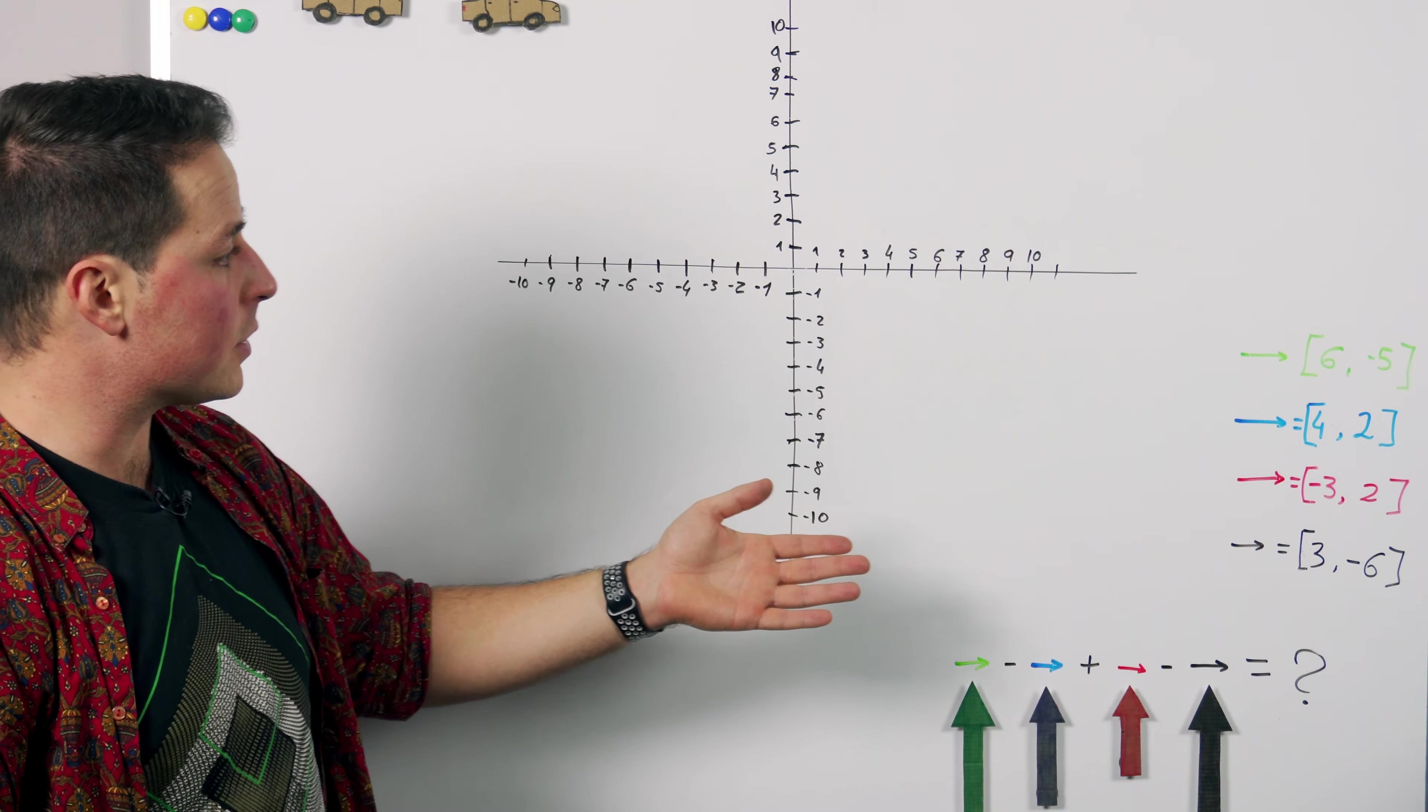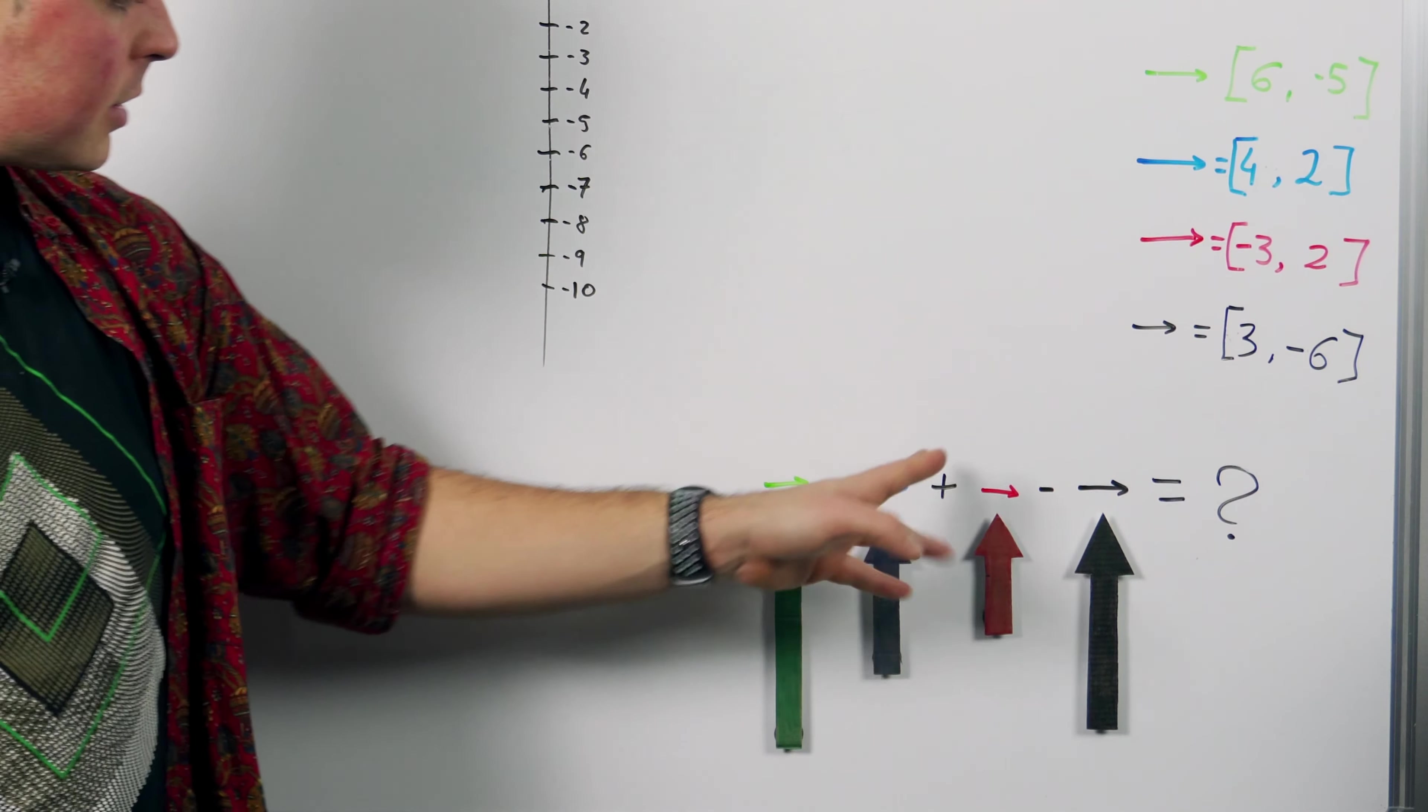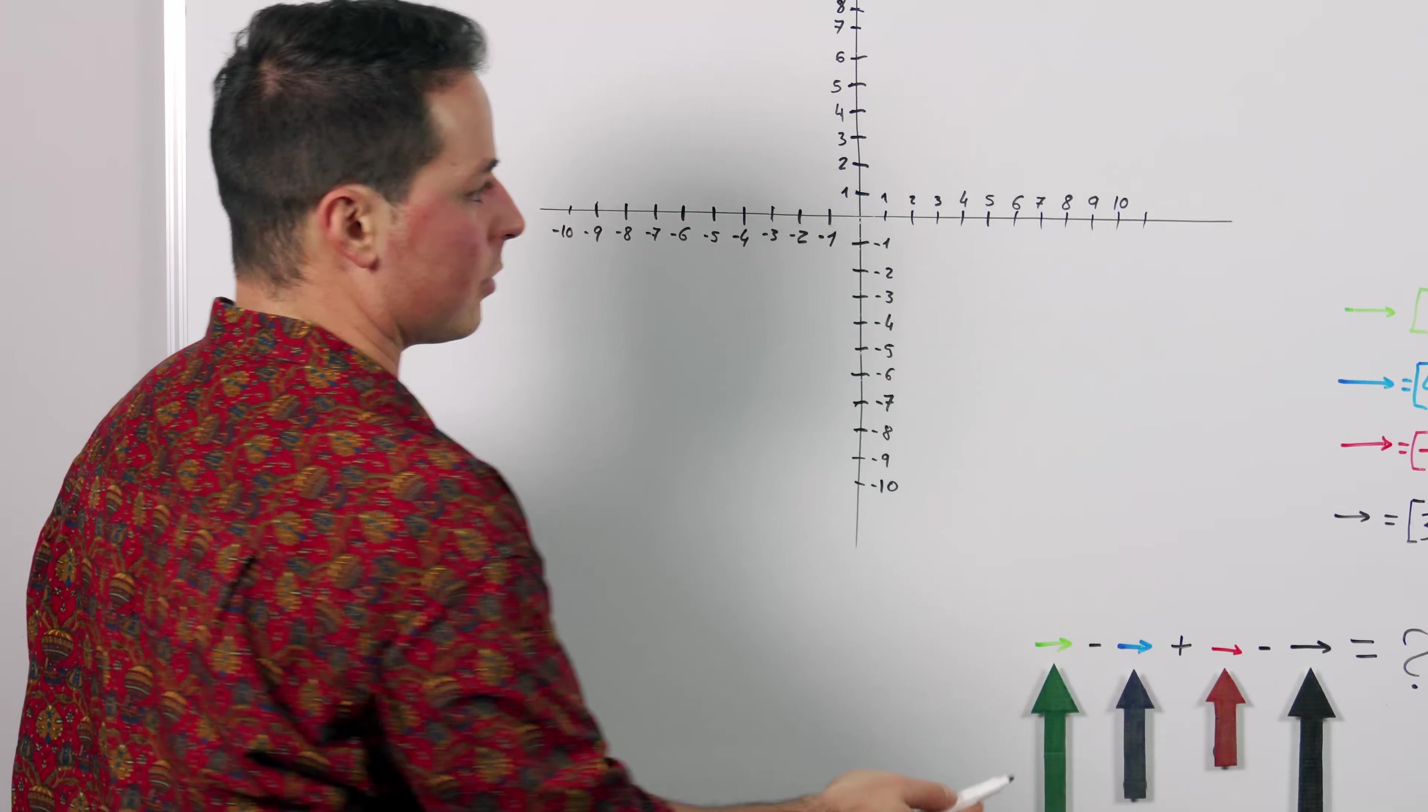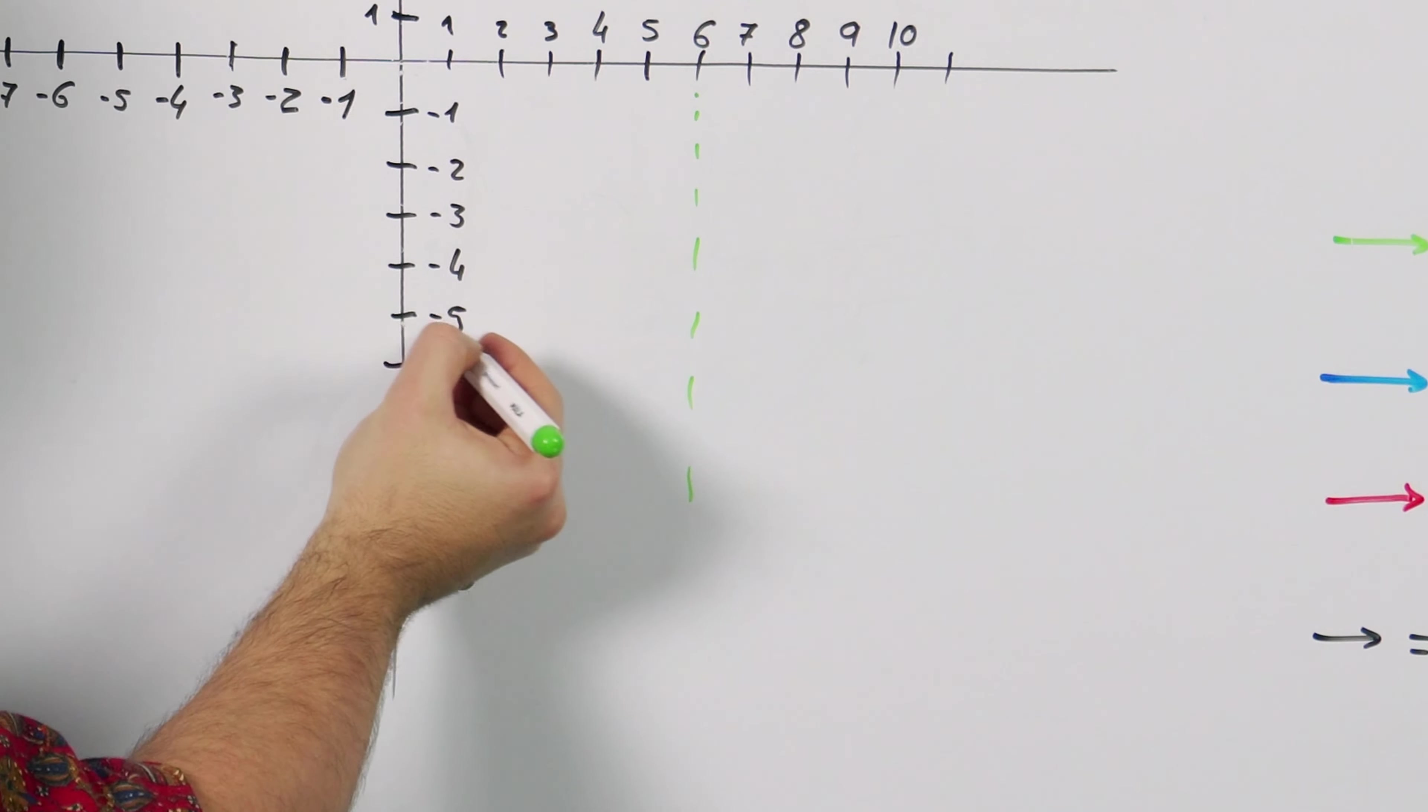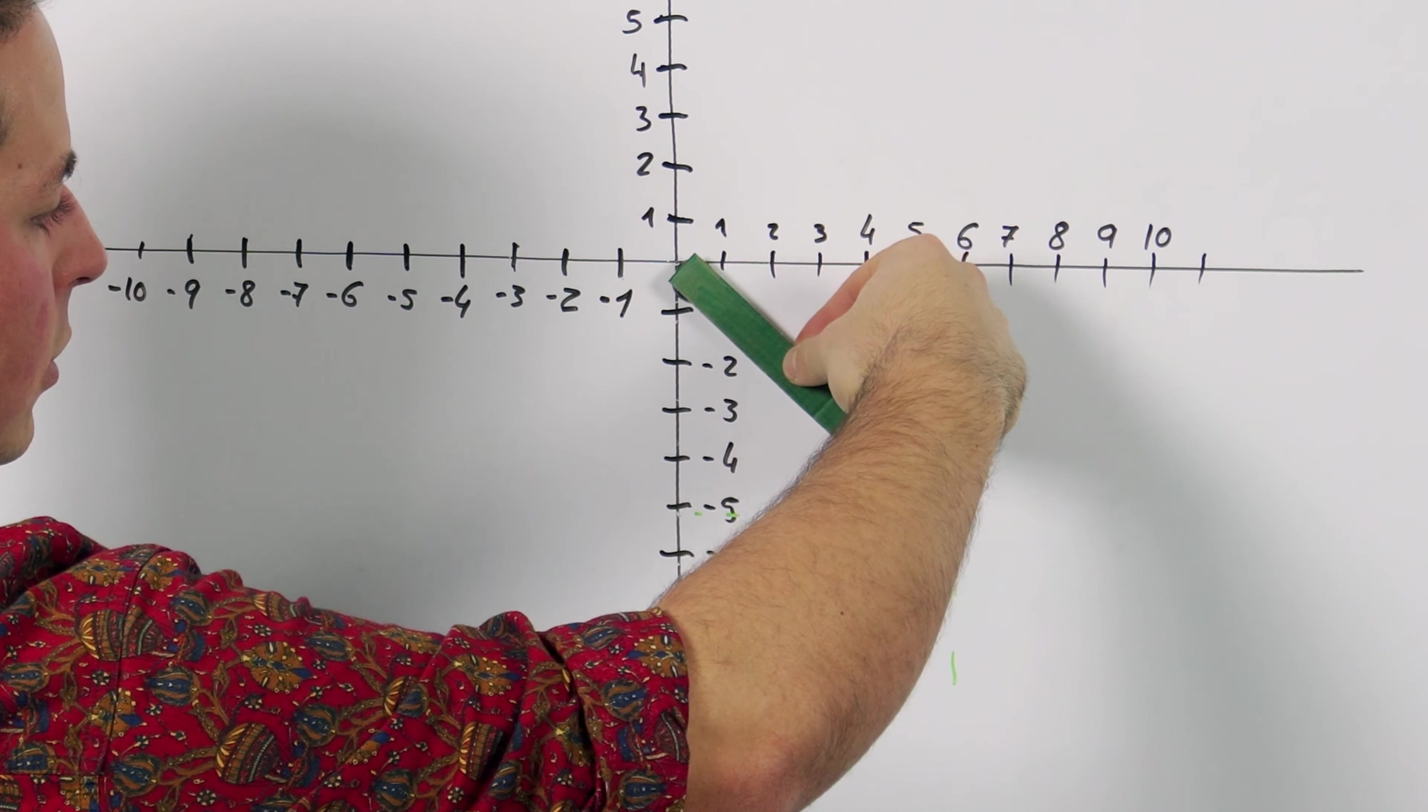Now that we know how to subtract vectors it's time to check that on the whiteboard. So our example is as follows. We're given four vectors and we need to operate with them in this way. You'll notice there is addition and subtraction mixed in but we'll see how this is not a complication at all. Let's start with the green vector. The green vector is 6 minus 5 so in the x-axis we have a 6 and in the y-axis we have a minus 5. Our green vector therefore arrives just about there.